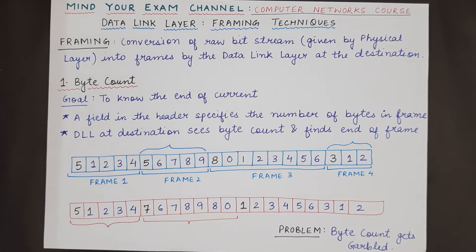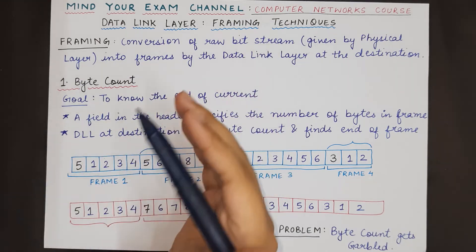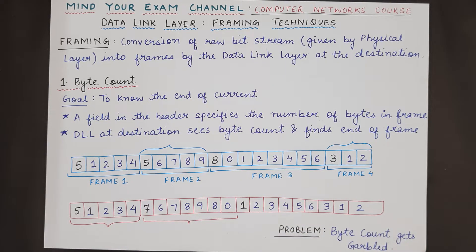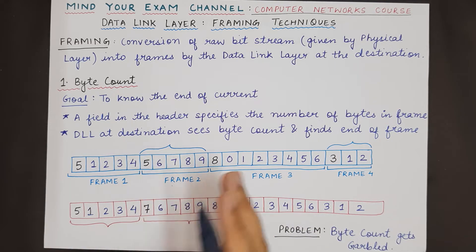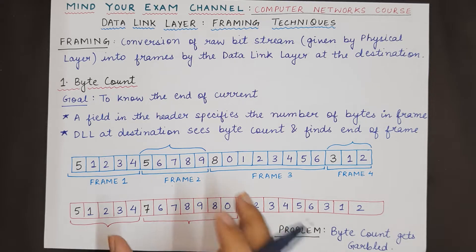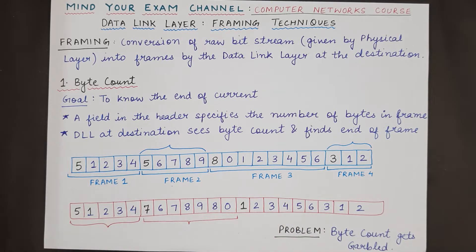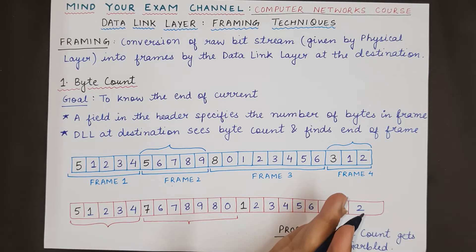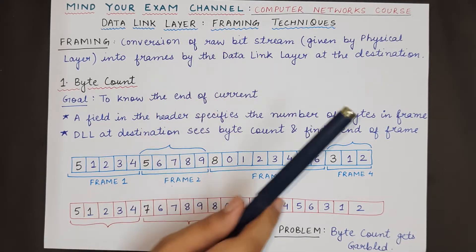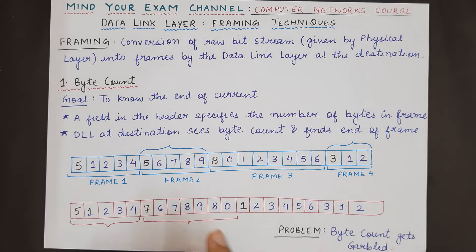Hello everyone, welcome back to my channel Mind Your Exam. In this video we will be studying one of the framing techniques used by the data link layer to convert a bit stream into frames. Framing seems easy, but it is actually very difficult because there should be a mechanism that helps the data link layer at the receiver side to know the starting and ending of a frame, distinguish different frames from each other, and check whether the contents were correctly received or whether there were transmission errors.